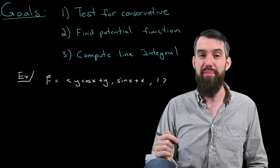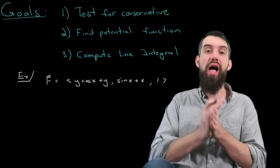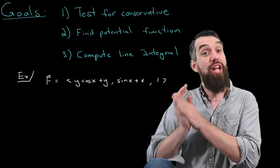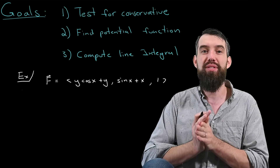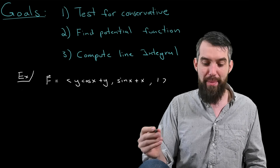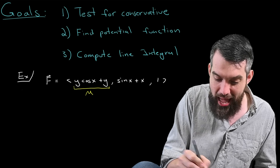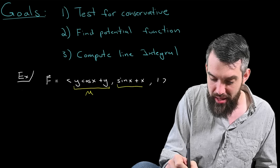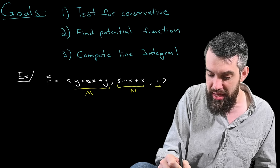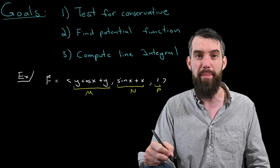I have this vector field here. It has an i-hat component, y cos x plus y, a j-hat component, sin x plus x, and a k-hat component, just y. I'm going to label these three m, n, and p so that I can refer to them a little bit more simply later on.